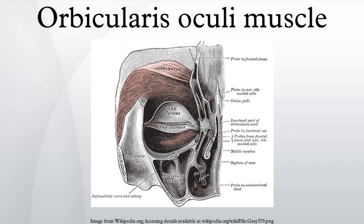Each time the eyelids are closed through the action of the orbicularis, the medial palpebral ligament is tightened, the wall of the lacrimal sac is thus drawn lateralward and forward, so that a vacuum is made in it and the tears are sucked along the lacrimal canals into it. The lacrimal part of the orbicularis oculi draws the eyelids and the ends of the lacrimal canals medialward and compresses them against the surface of the globe of the eye, thus placing them in the most favorable situation for receiving the tears. It also compresses the lacrimal sac.